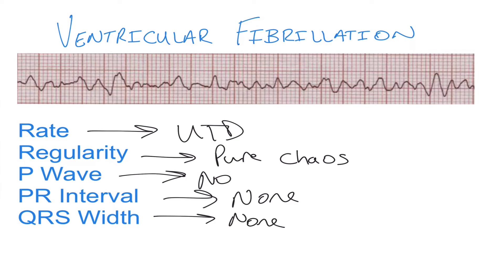Basically, if your patient is unconscious and you're looking at something that just looks like a bunch of squiggly lines on your ECG, there are a bunch of things you should be doing — but there's a pretty good chance you're looking at V-fib.